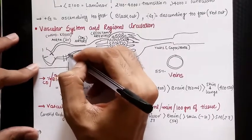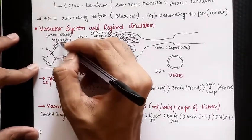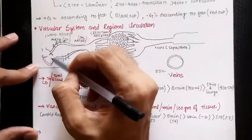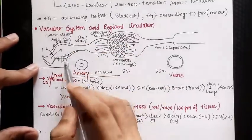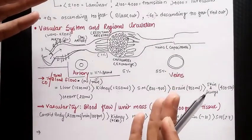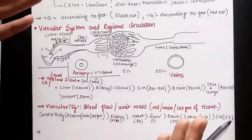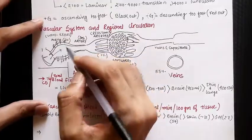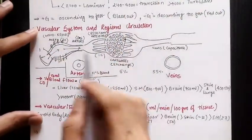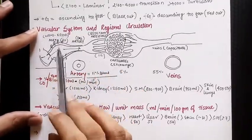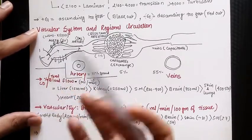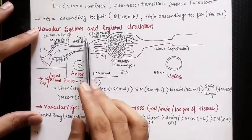The aorta produces the Windkessel effect, which is due to the stretching of the elastic lining of the aorta. Due to the sudden flow of blood into the aorta, there is a stretch, and then in the diastolic phase it comes back to its normal position, pushing blood in the forward direction. This Windkessel effect is present in the aorta and larger elastic arteries.